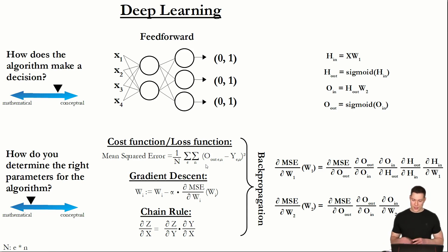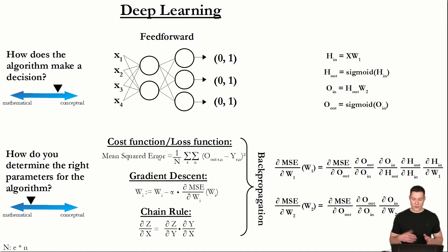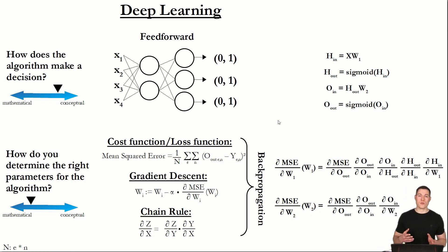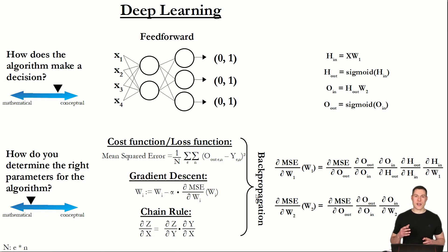Instead of determining the partial derivative of the mean squared error with respect to weight matrix 2 all at once, we will determine it with respect to each individual weight — weight 1-1, weight 2-1, and so on. That way, even without matrix calculus, we can understand what's going on in these formulas. Once we're done, we can transfer that knowledge back to dealing with matrices, and when we implement backpropagation in code, take advantage of the speed of NumPy.